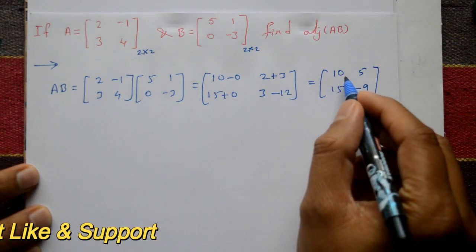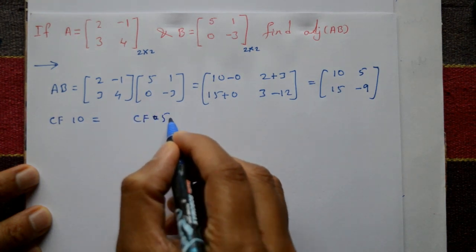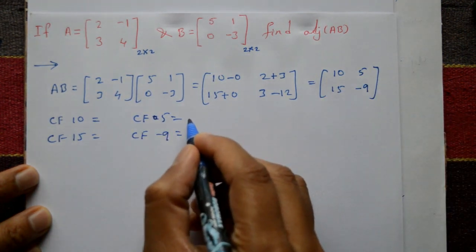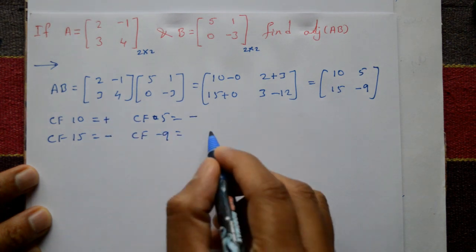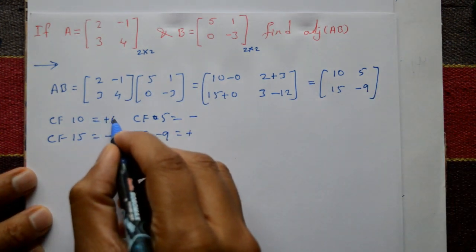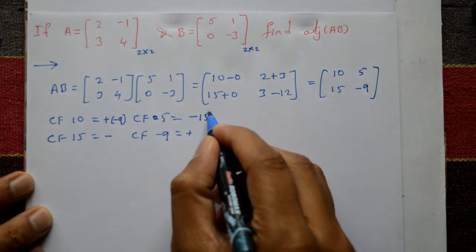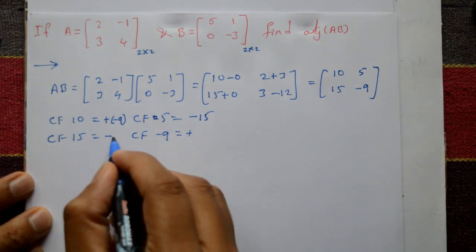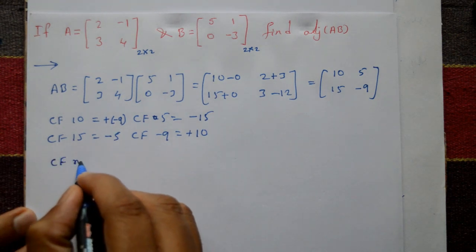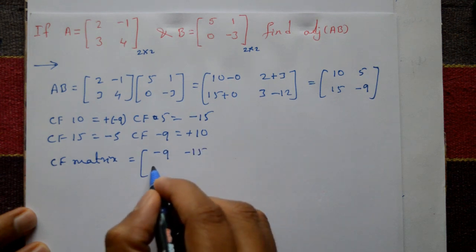Now find the co-factor of each element. The sign pattern is plus, minus, minus, plus. Co-factor of 10 is minus 9; co-factor of 5 is minus 15; co-factor of 15 is minus 5; co-factor of minus 9 is 10. So the co-factor matrix is [minus 9, minus 15; minus 5, 10].